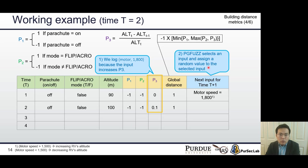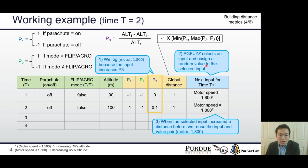Second, PGFUZZ also randomly chooses an input for next time T=3. Let's assume that motor speed input is reselected. PGFUZZ reused the input and value pair motor speed and 1800 because this input set increased propositional distance before. As you can see, in order to make this global distance a negative value, our mutation engine keeps increasing this propositional distance.